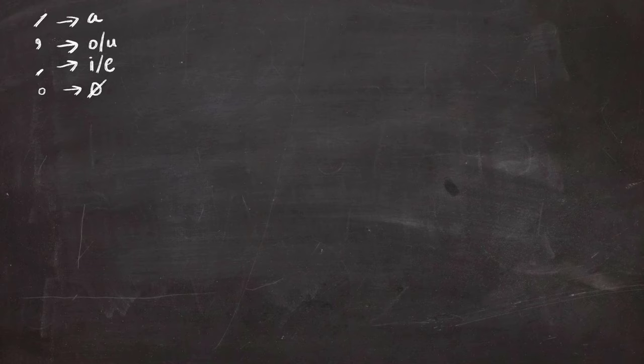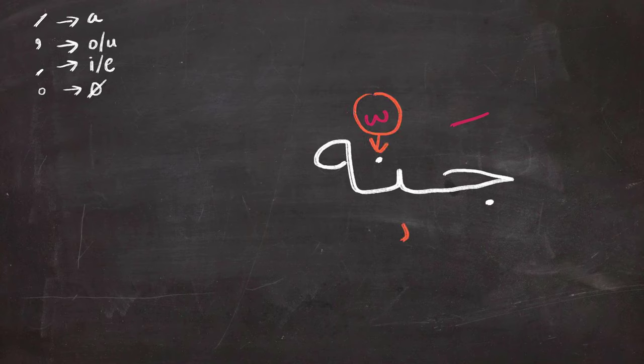So how does this work and how does it sound? In the example I'm going to give right now: jannah, jannah, jannah. As you can see, the noon has the symbol of shedda, which means that there are two times noon in this word. The first one of them is sukoon and the second one has fatha, so that's why we say jannah.